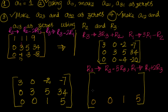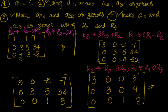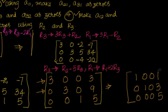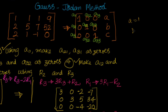Row 3 is solved: 0 0 1 with value 5. For r2 = r2 - 5r3: 0, 3-0=3, 5-5=0, 34-25=9. Taking 3 out gives 0 1 0 3, so y equals 3. For r1 = r1 + 2r3: first element 3 (unchanged), second 0, third -2+2=0, fourth -7+10=3. Taking 3 out from row 1 gives 1 0 0 1, so x equals 1.